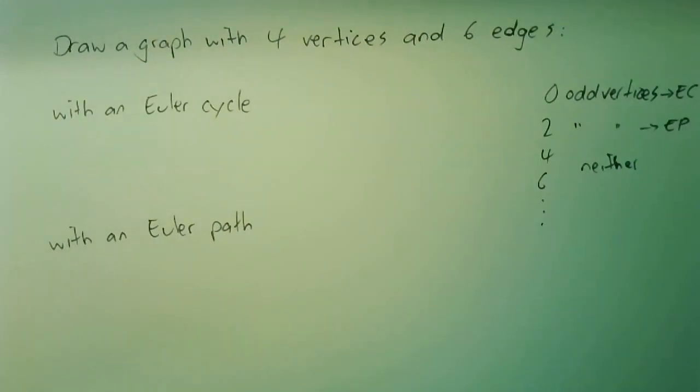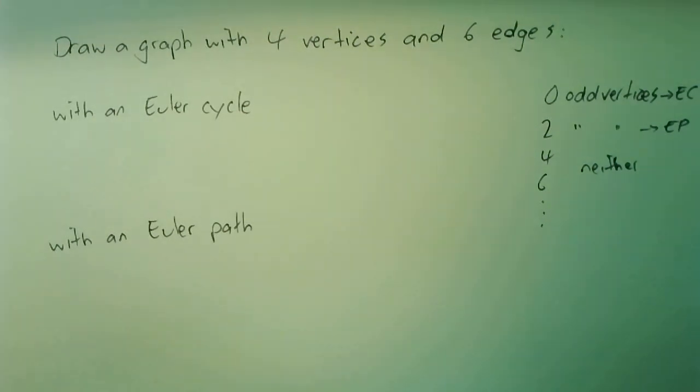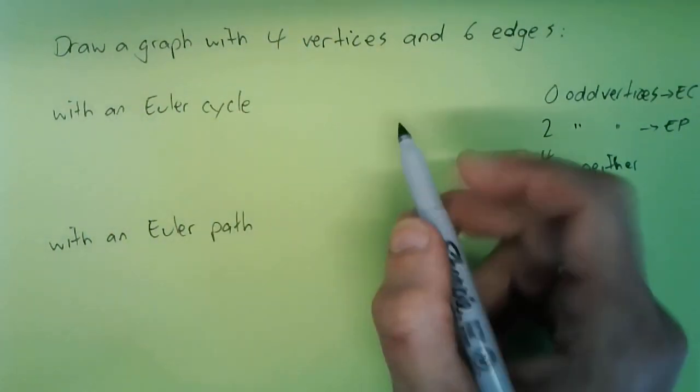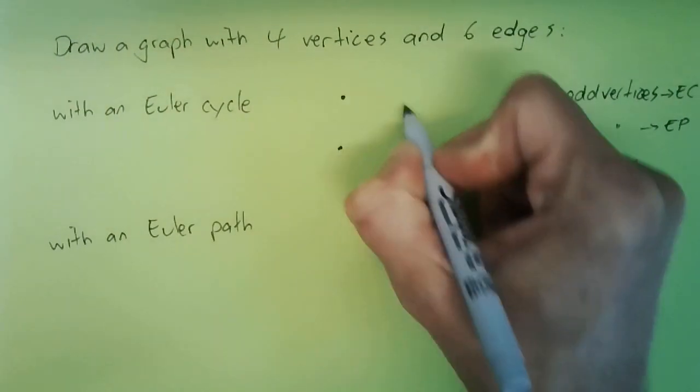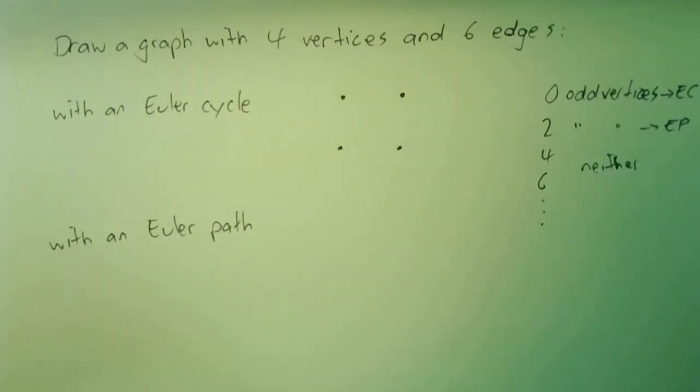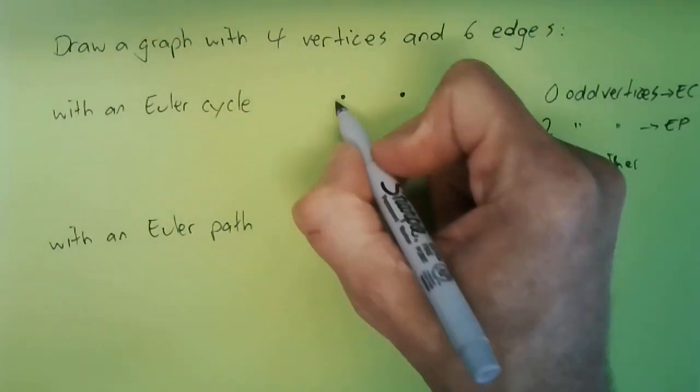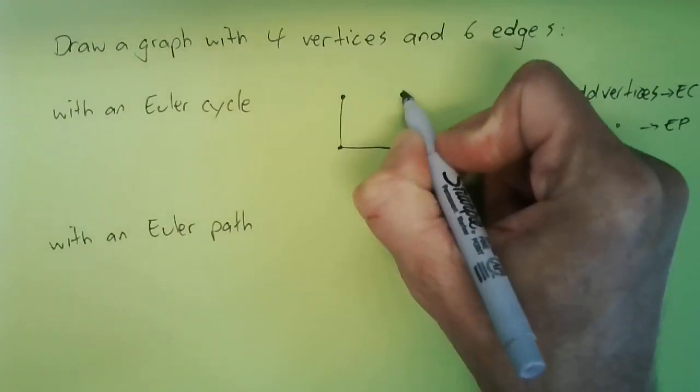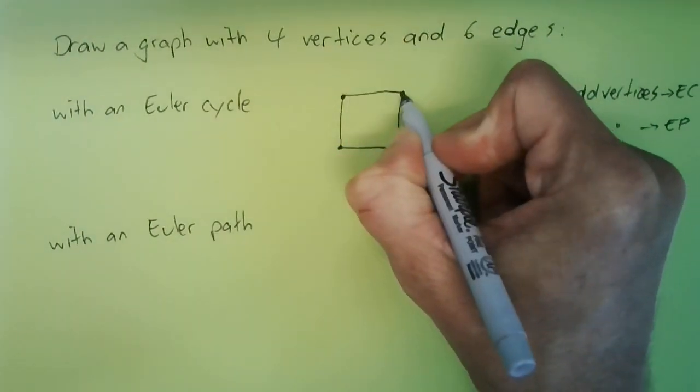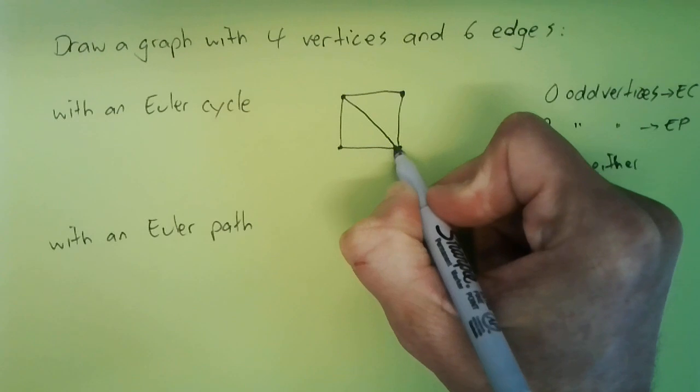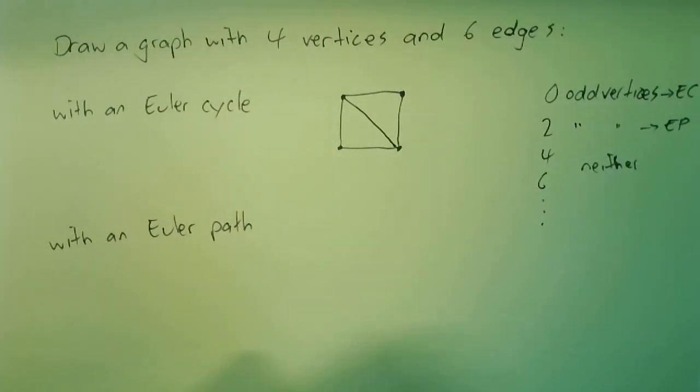So we need to count whether the vertices are odd or even. First, four vertices—I'm going to draw it in a square shape. There's my four vertices, and I get to put in six edges. I'm going to put in one, two, three, four—there's lots of ways I could do this—there's five. Now let's look at how we're lining up so far. I've still got one more line to draw.